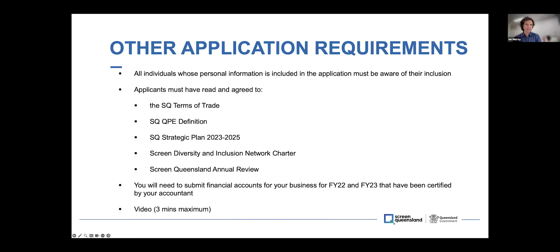In terms of other application requirements, any individuals whose personal information is included in your application need to be aware that you're including that information — please don't include details of individuals without checking with them first. The Screen Queensland terms of trade, the qualifying production expenditure definition, the strategic plan for 2023 to 2025, the Screen Diversity and Inclusion Network Charter, and the Screen Queensland Annual Review are all mandatory documents you'll need to have read and agree to as part of the submission process. All those documents are available with links on the enterprise page.